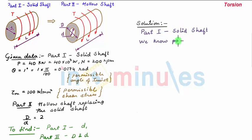Now we know power transmitted by solid shaft is given as P = 2πnT/60, where n is the rpm and T is the torque.